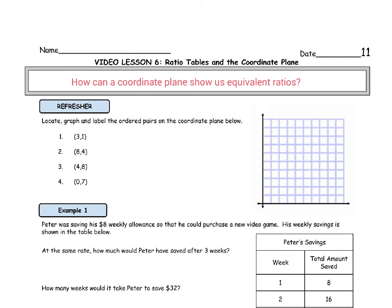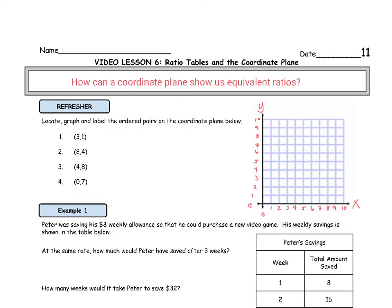Let's go ahead and start with the refresher. It says locate, graph, and label the ordered pairs on the coordinate plane below. Before we do that, let's label our coordinate plane to the right. Let's go ahead and take a look at some of the components that make up a coordinate plane. You can see that there's a horizontal number line, that number line that goes left to right. That is known as our x-axis.